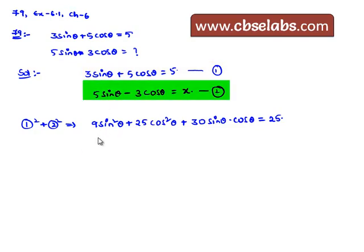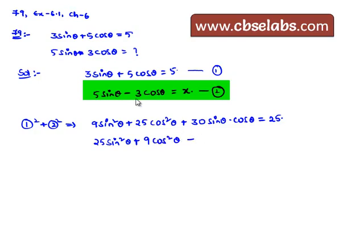And equation 2 squared: (5 sin θ − 3 cos θ)² equals x². Here, a² is 25 sin²θ, and b² = (3 cos θ)² = 9 cos²θ, minus 2ab which is 2 × 5 × 3 = 30, so minus 30 sin θ cos θ.